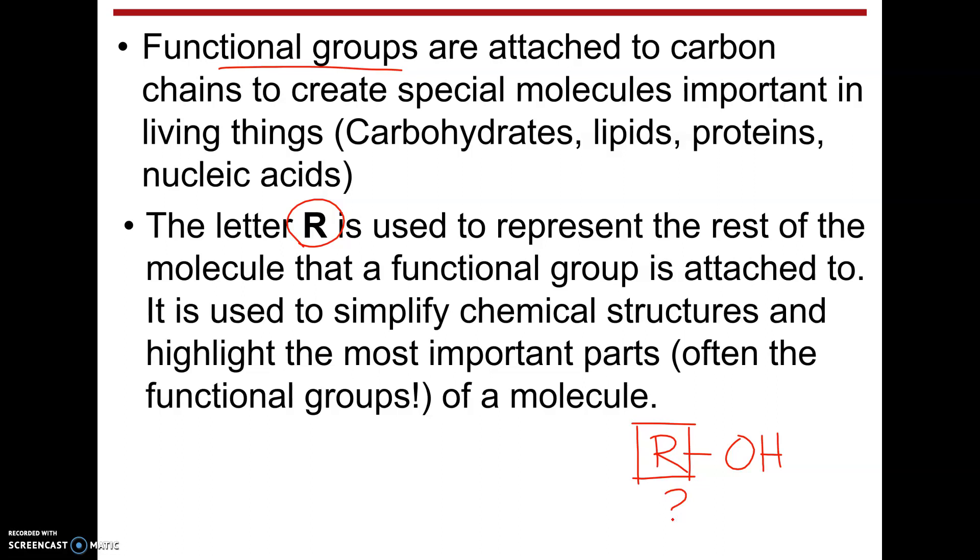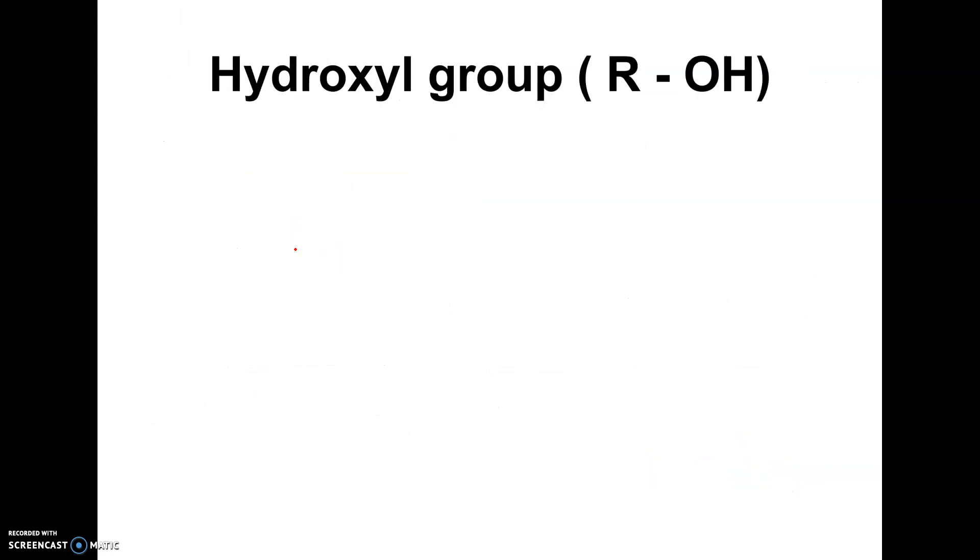This basically means it's attached to some carbon compound. So this is a carbon, and then it could be a ring of carbon, a chain of carbon, whatever, but we're focusing on the functional group. So be aware when you see the letter R that R is not an element itself, that R is actually the attachment point for the functional group.